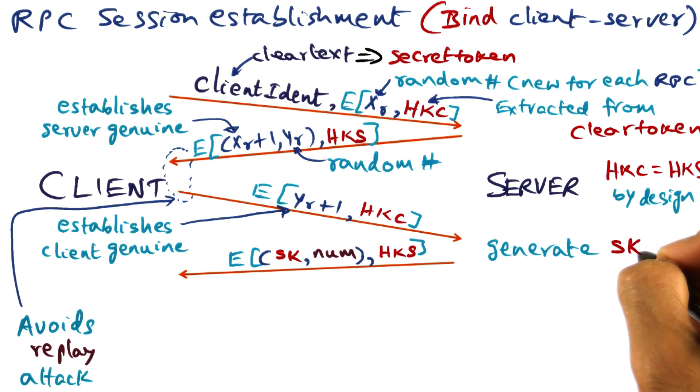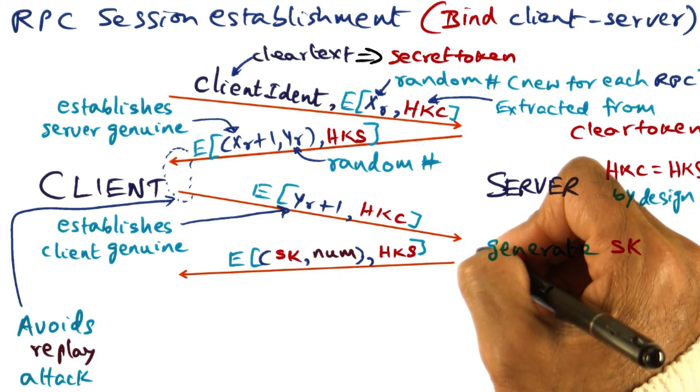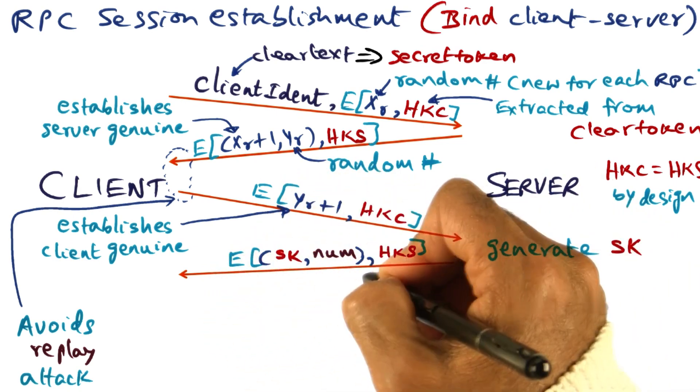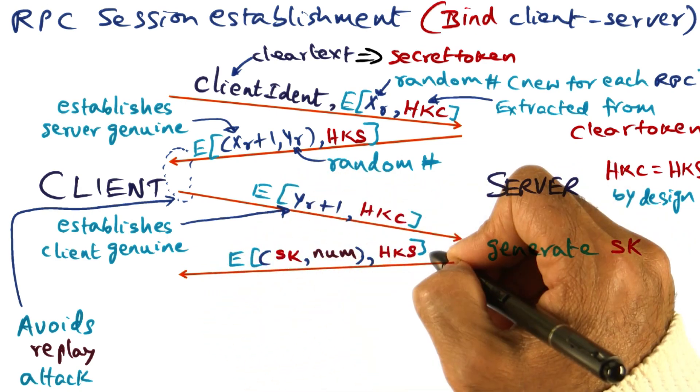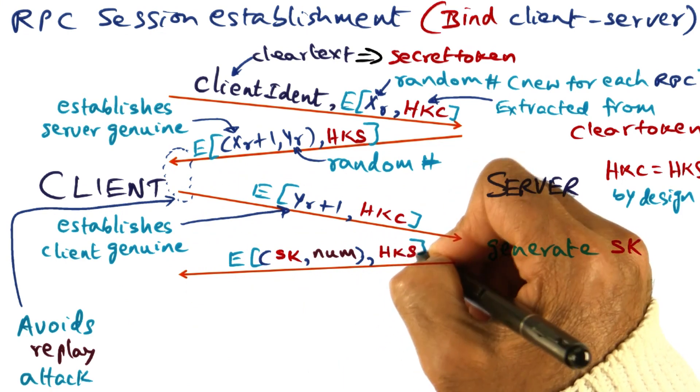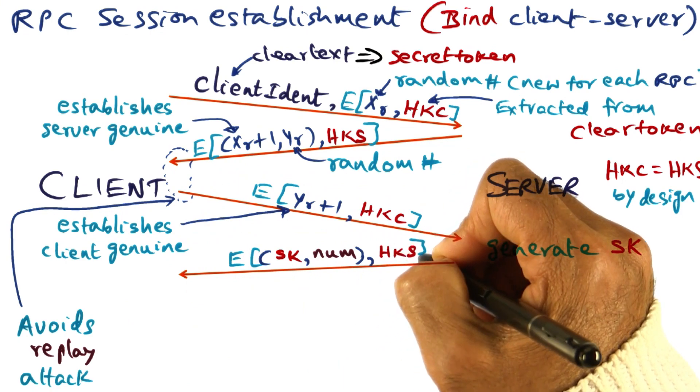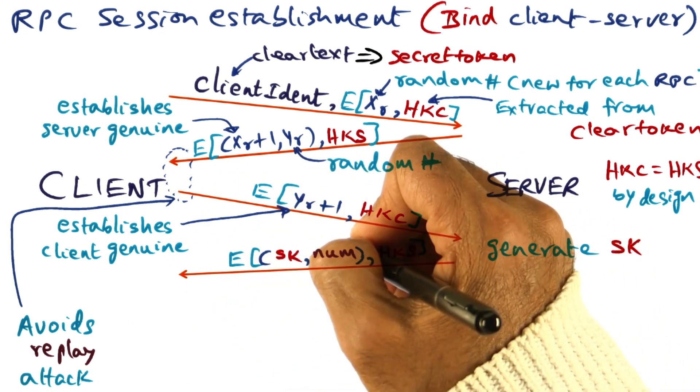Now it's going to send this new session key it generated for this particular RPC session as an encrypted cipher to the client using the handshake key as the private key for encrypting this message.